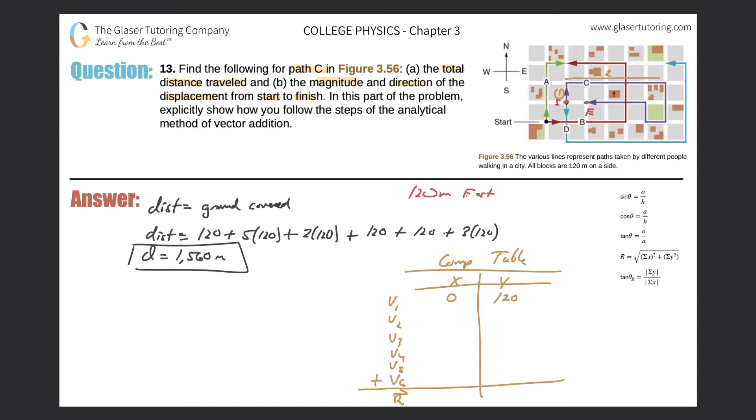Now here's vector number two. Remember we're starting here now and we're going all the way over to that side. For vector two, remember your axis would essentially start right there, and this vector is now going in the positive x direction. How many blocks? Five blocks.